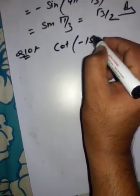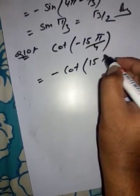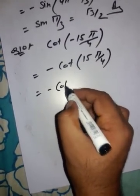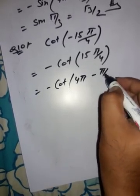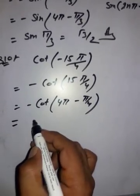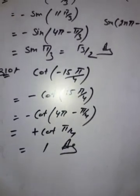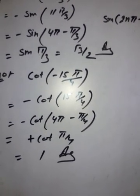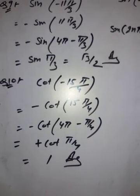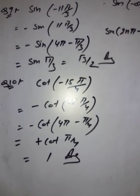Question 10: cot(-15π/4). We write -cot(15π/4). Now 15π/4 = 4π - π/4, of the form 2nπ - θ. Using cot(2nπ - θ) = -cot θ, we get -(-cot(π/4)) = cot 45° = 1. That is our answer. Please subscribe to this channel, Study Online, for NCERT exercises and shortcut tricks for mathematics.